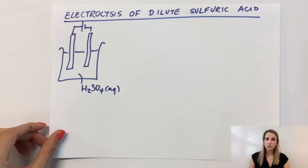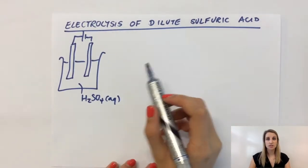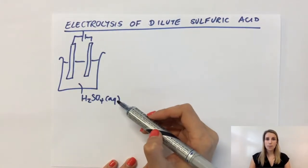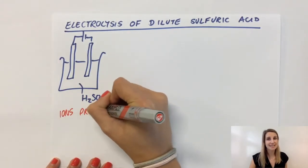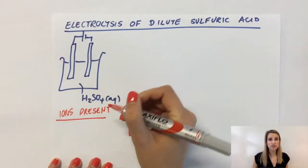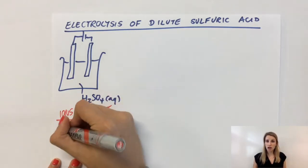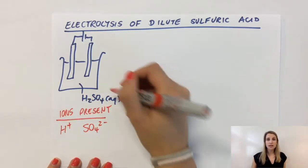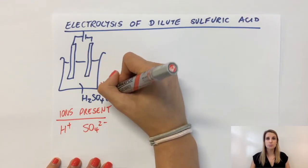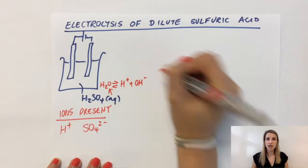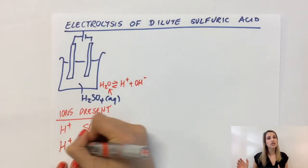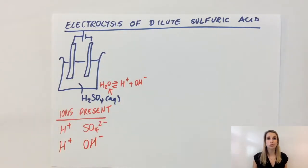This is my setup for the electrolysis of sulfuric acid, so let's think about the ions present like we normally do. From the sulfuric acid, you've got two ions: H+ and sulfate ions. But because it's aqueous, just like we did before, we know that water can break down into H+ and OH⁻, so those two ions are also present.